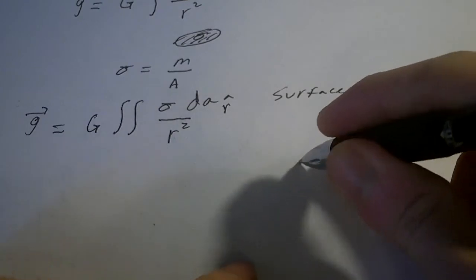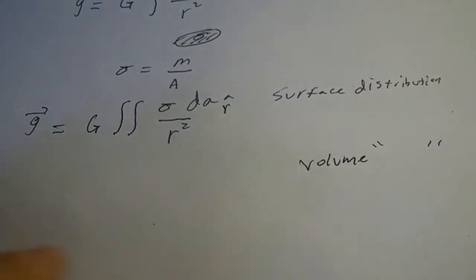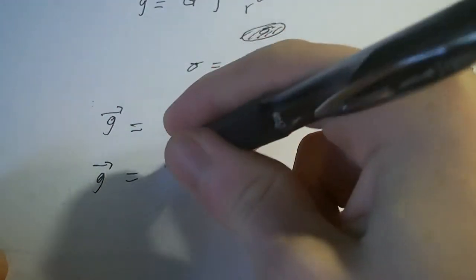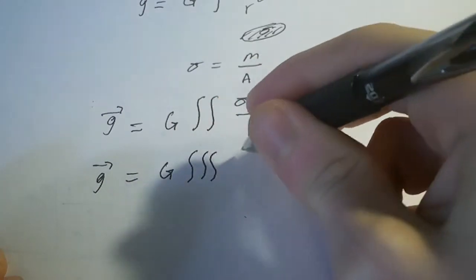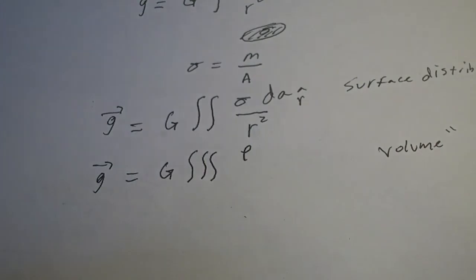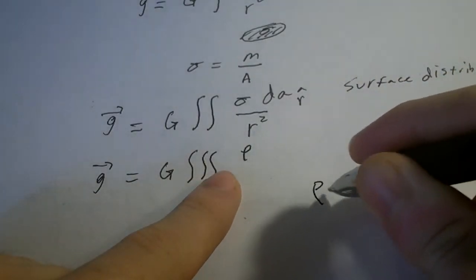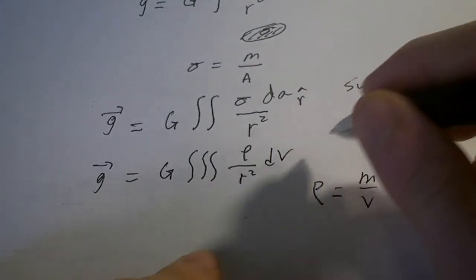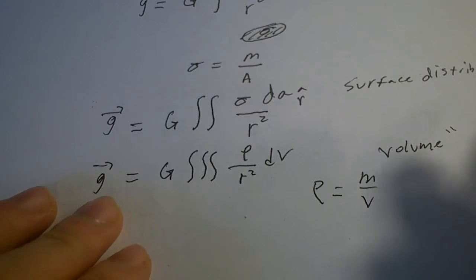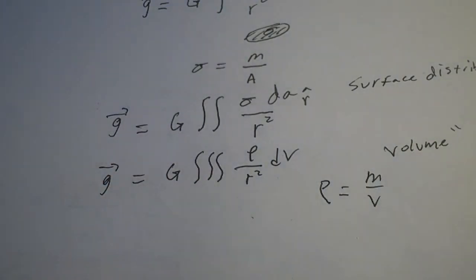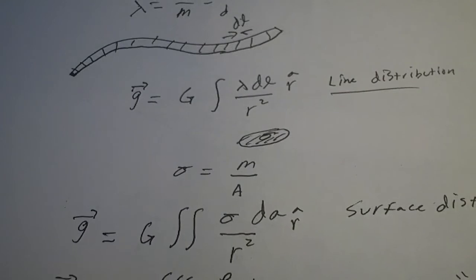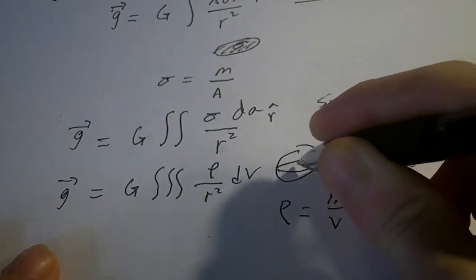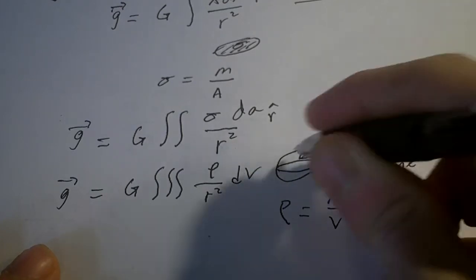For a volume distribution, the gravitational field g is capital G times the triple integral of the volume mass density rho — in units of mass per volume — over r squared, times dV, where dV is your volume element, representing small boxes of dx dy dz.